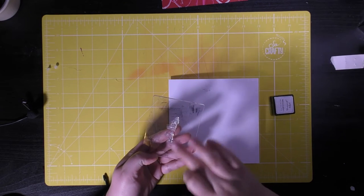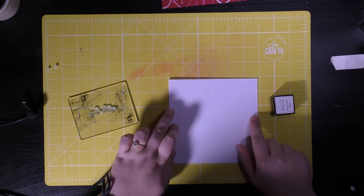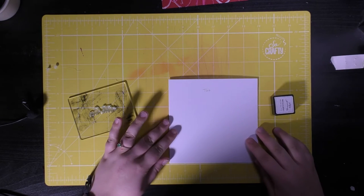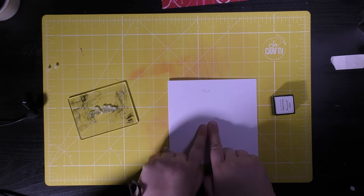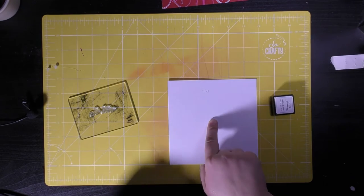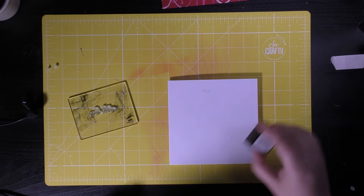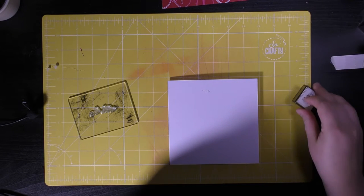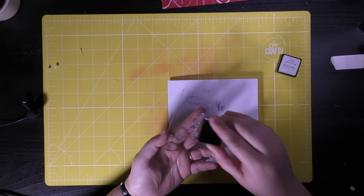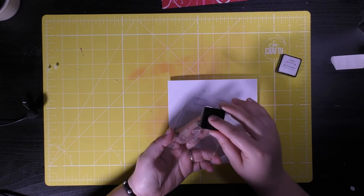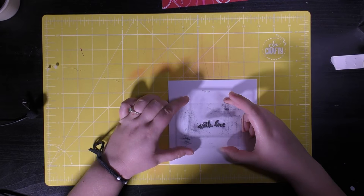I'm going to use the lines on my cutting mat to help me measure roughly the center. Each of my lines is an inch apart so I want to be three lines up and three lines in. Then I'm going to take my ink pad and gently tap it over the surface of the stamp, making sure that the whole stamp is covered.